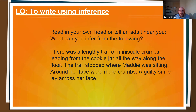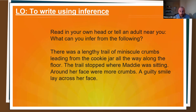Let's read it together. There was a lengthy trail of minuscule crumbs leading from the cookie jar all the way along the floor. The trail stopped where Maddie was sitting. Around her face were more crumbs. A guilty smile lay across her face. So what's the inference? The inference is that Maddie has been eating the cookies. It doesn't say that, and that's what makes it inference. We've got to use the clues: the crumbs go all the way from the cookie jar along the floor towards her; the trail stopped where Maddie's sitting; around her face are more crumbs; and there's a guilty smile laying across her face. All those clues added up to tell you that maybe she shouldn't have taken those cookies, but she chose to.